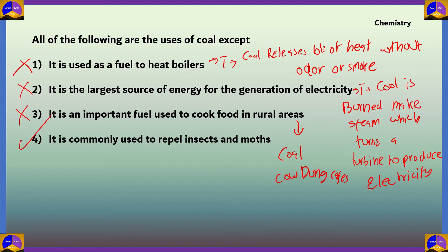The correct answer is option 4: coal is commonly used to repel insects and moths. In this use, coal tar is actually involved — but coal tar is not coal itself; it is a byproduct of coal and coke. So this is not a use of coal, making option 4 the correct answer for this question.